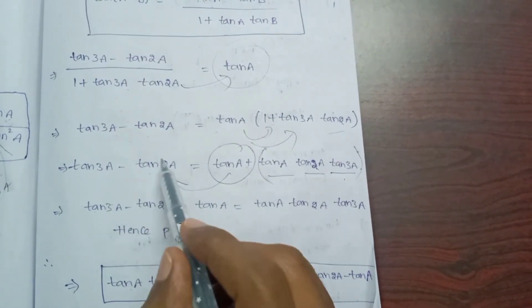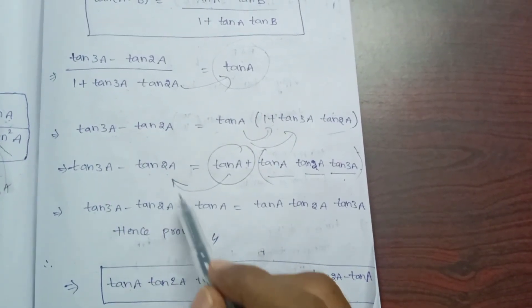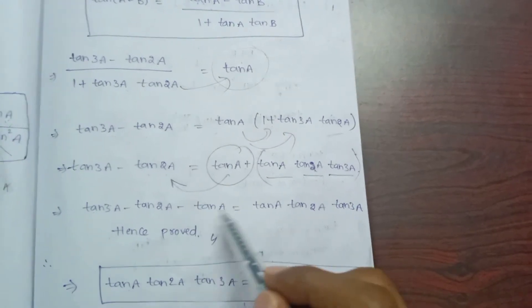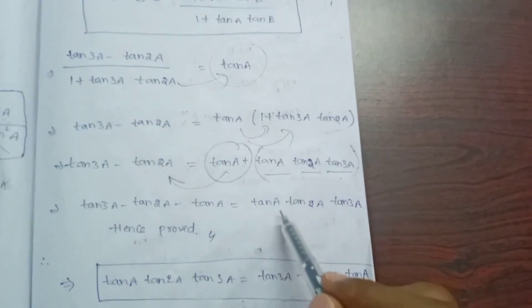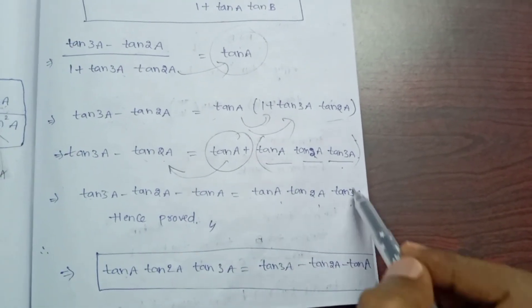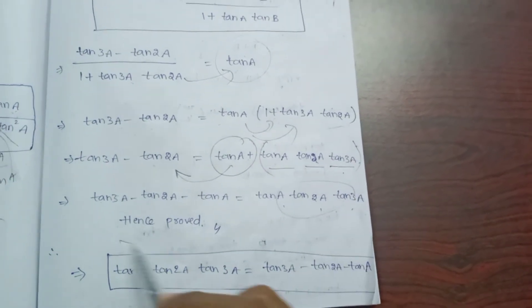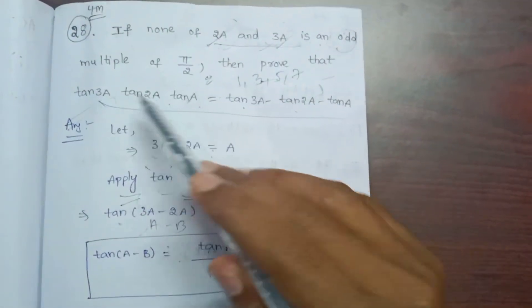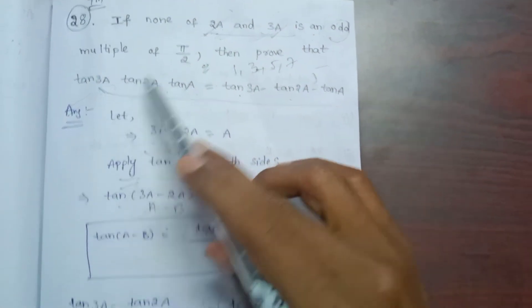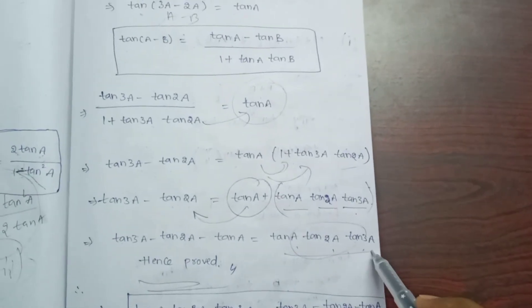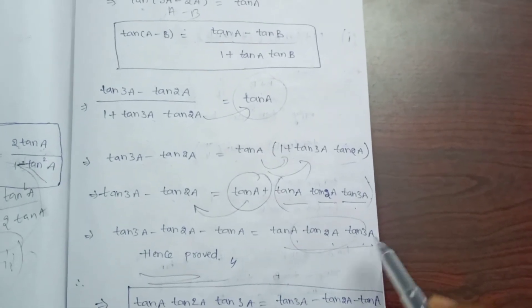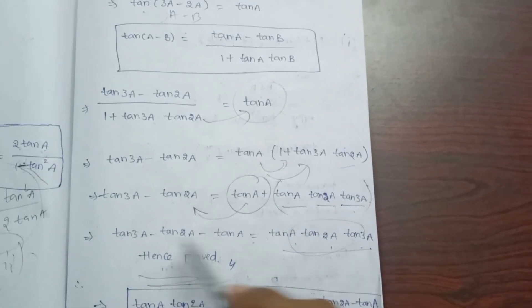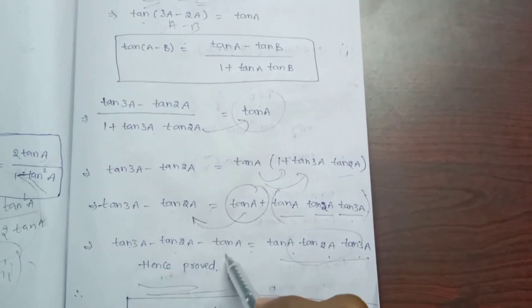So tan3a minus tan2a minus tana is equal to tan3a · tan2a · tana. This is equal to tan3a minus tan2a minus tana, which is what we needed to prove.